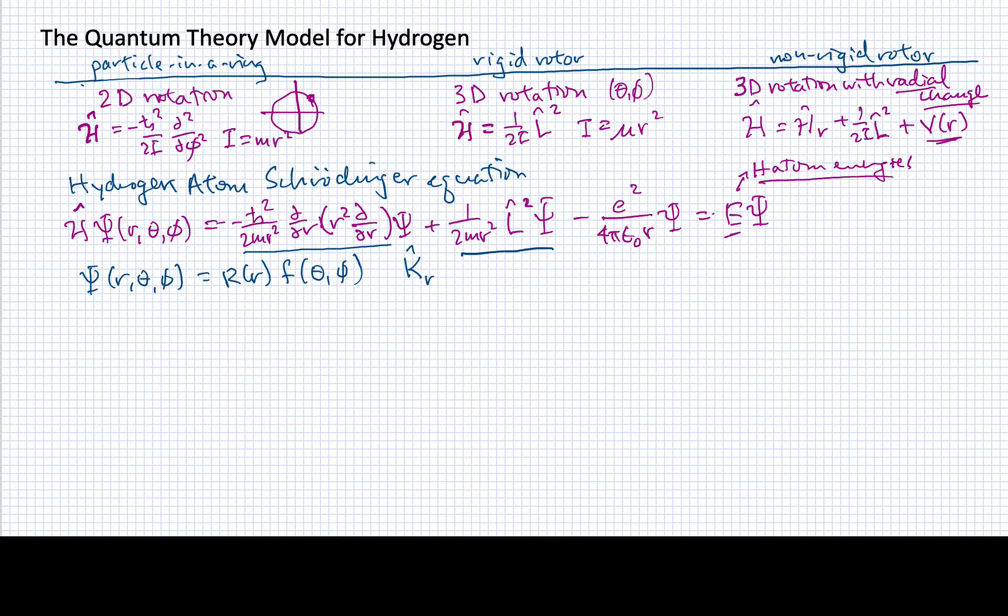This is already simplified to the extent that I want. Because this is not difficult to write but I have to write it many times, I'm simply going to write this as V hat, the potential energy operator for the Coulomb potential.